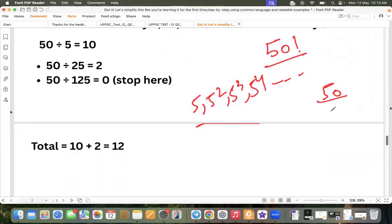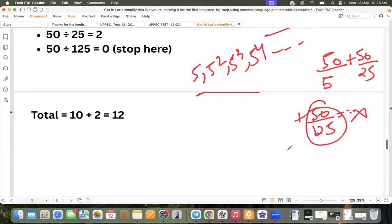So 50 divided by - first we will do 5 - plus 50 divided by 25, plus 50 divided by 125. Ab ye 50 divided by 125 to decimal me aega to iska koi matlab banta nahi. Jahan par it will come very less near to 0, wahan par we have to stop.